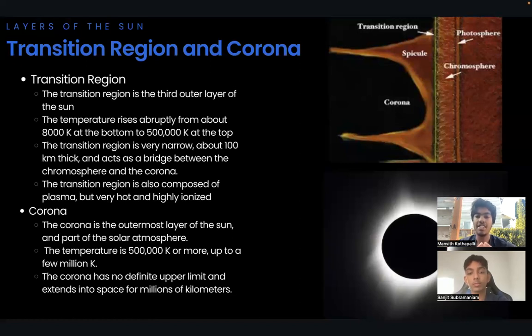Now let's talk about the last and outermost layer of the Sun, the corona. The corona is part of the solar atmosphere. The solar atmosphere consists of all the outer layers: the photosphere, chromosphere, transition region and corona.